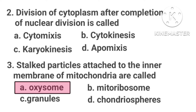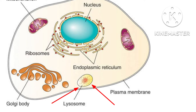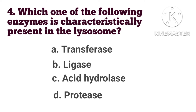Which one of the following enzymes is characteristically present in the lysosome? Option A, transferase. Option B, ligase. Option C, acid hydrolase. Option D, protease. A lysosome is a membranous sack of hydrolytic enzymes that can digest macromolecules. Lysosomal enzymes can hydrolyze proteins, fat, polysaccharides, and nucleic acid. So the correct answer is Option C, acid hydrolase.